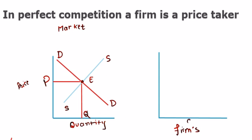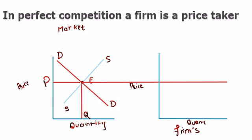Again, the same way, the quantity has been taken on the x-axis and price has been taken on the y-axis. You can see whatever price was determined by the industry, by the market, the same price has been determined for the firm as well.